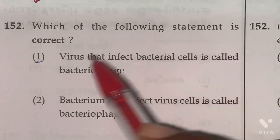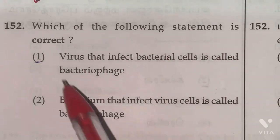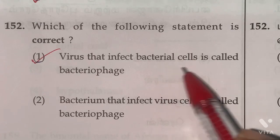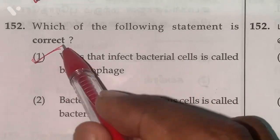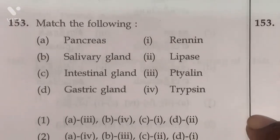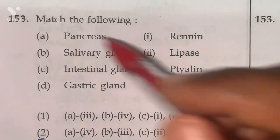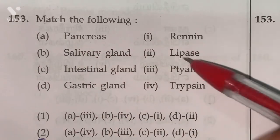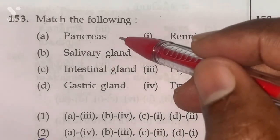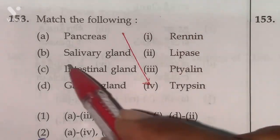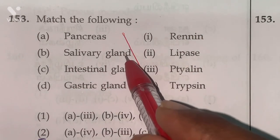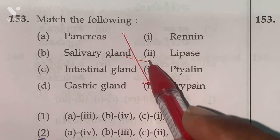Question 152: Which of the following statements is correct? The first one — a virus that infects bacterial cells is called a bacteriophage. That is the correct statement. Question 153: Among the following, pancreas secretes the enzyme trypsin, and salivary gland secretes the enzyme ptyalin.